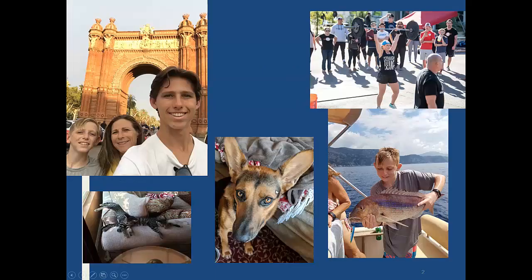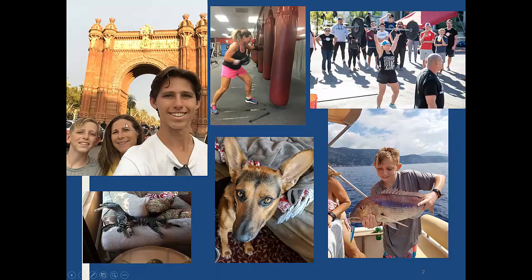Moving right along, I thought it might be fun for you to see a little bit about who I am. This is me with my two kids in front of the Arc de Triomphe in Barcelona. Here's my younger son in Croatia catching a fish right off at Dubrovnik. This is my dog Allie and my two cats Bella and Stella — I can't really tell them apart. And this was a CrossFit competition I was in just this weekend.